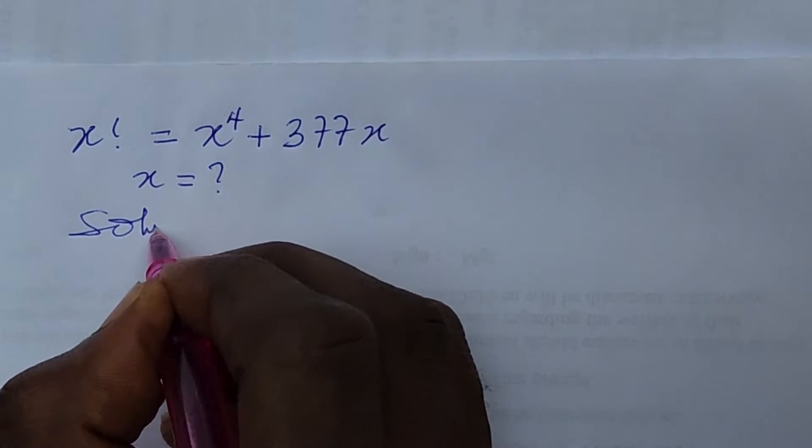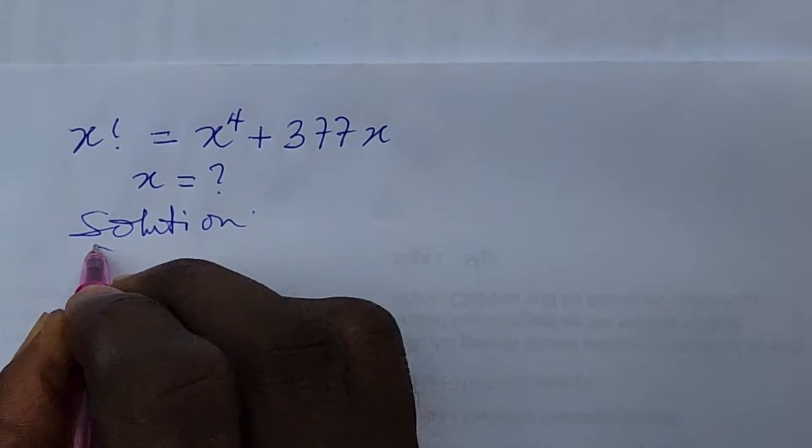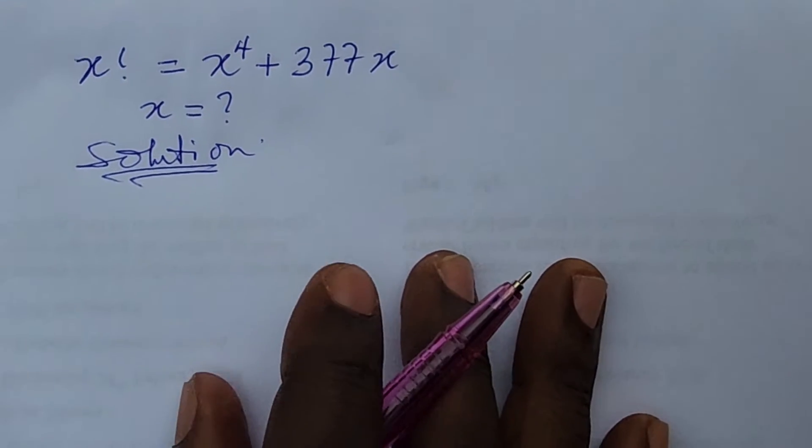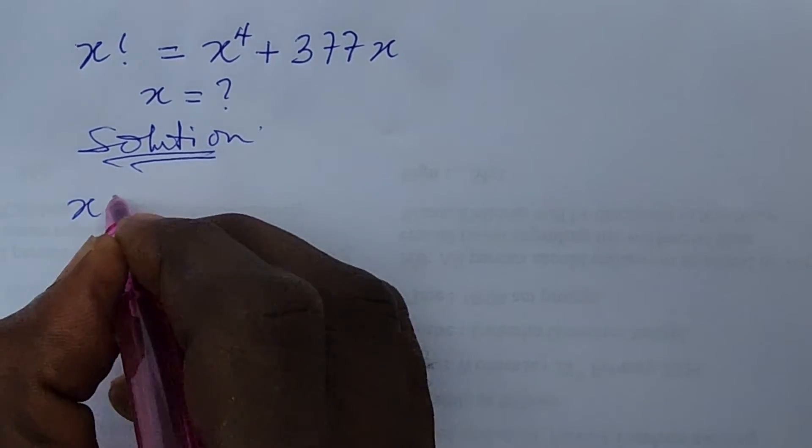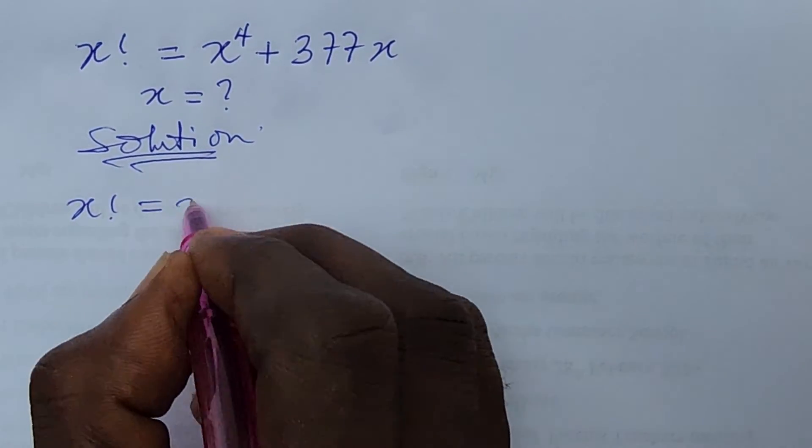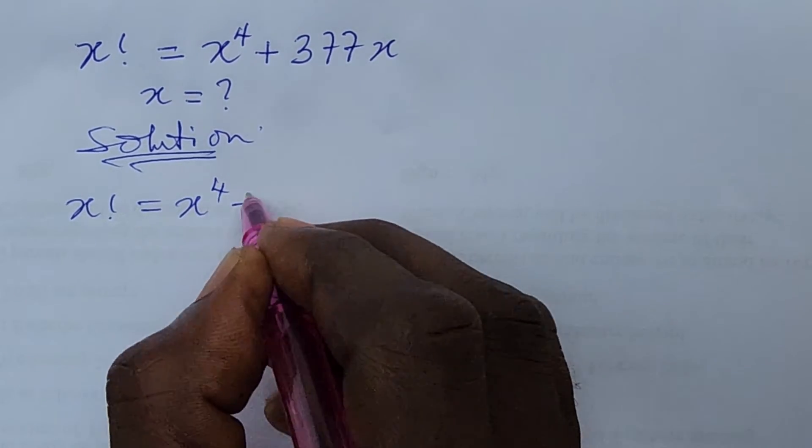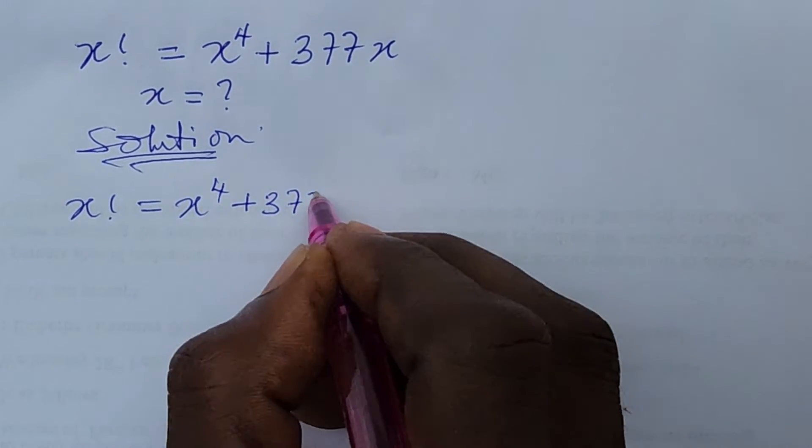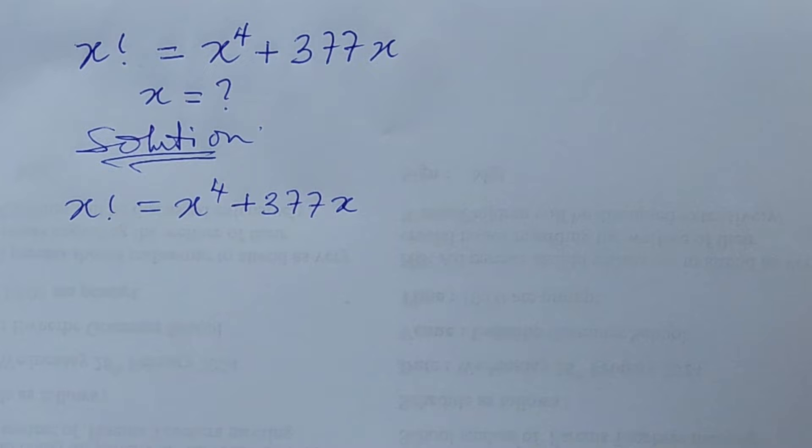So take a selection. Okay so from this question here which is your x factorial is equal to x to the power of 4 plus 377x, right? Good.